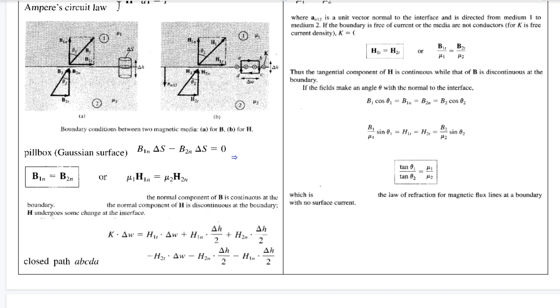Since B equals H mu, we substitute to get mu1 H1n equals mu2 H2n. If we divide by mu1 and mu2, H1n and H2n are not equal. So the normal component of magnetic field intensity H is discontinuous.